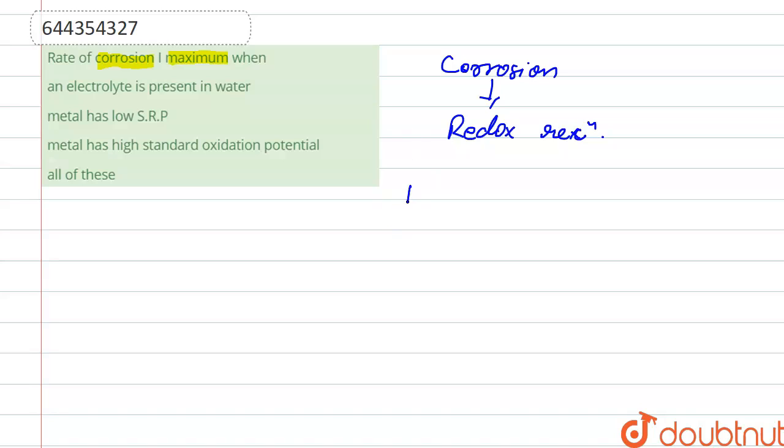So here the reaction is: when Fe reacts with oxygen in the presence of moisture, it forms Fe2O3·xH2O, right? This is the form of rust.